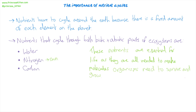First of all, nitrogen. We need nitrogen as an element because it is what helps us to make DNA, which contains nitrogen, and also proteins, which also contain nitrogen. Amino acids are made using nitrogen. We also need carbon. Carbon is essential for all the molecules that we need for life. It's present in sugars, carbohydrates, glucose, for example, and also fats and proteins.